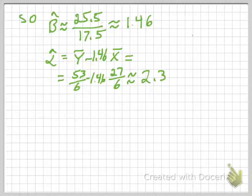So now I've calculated the numerator and denominator in my expression for beta hat, so I get 25.5 over 17.5, which is approximately 1.46. And then I plug in the numbers for alpha hat, and I get approximately 2.3.